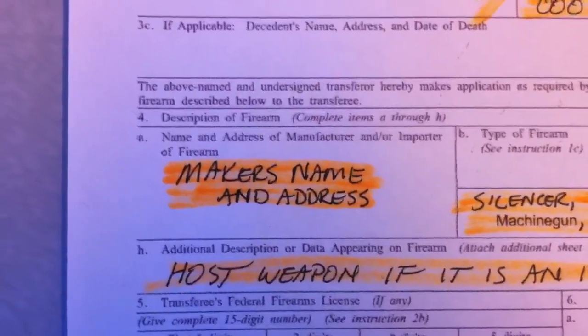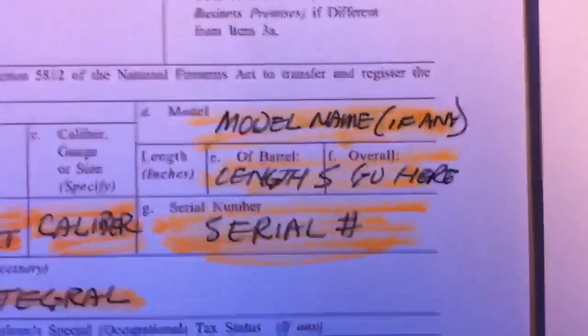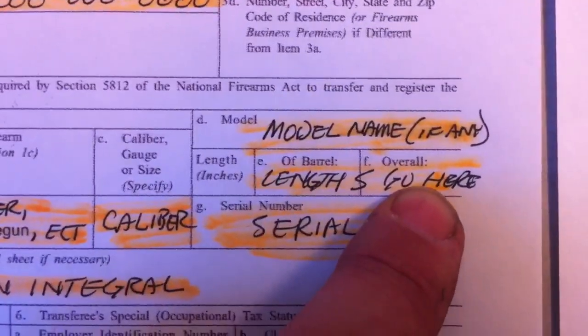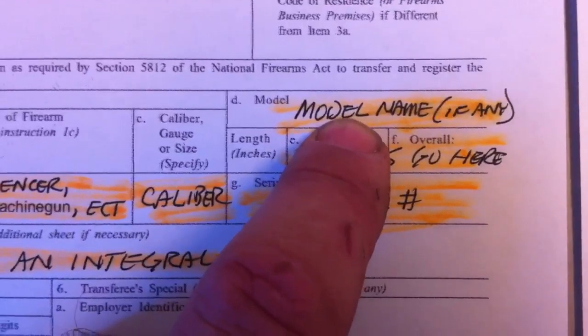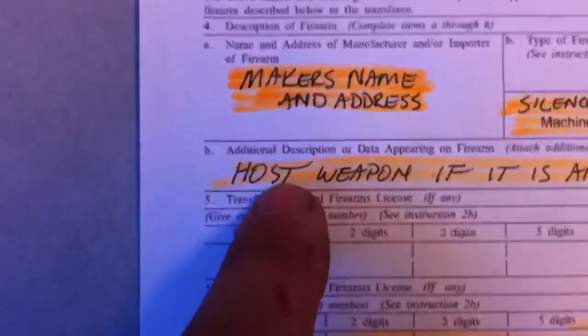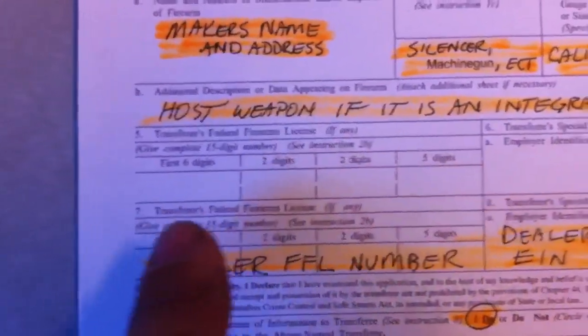Block 4 is the information surrounding the weapon itself. You'll have the maker's name and address, what it is — whether it's a silencer, machine gun, etc. As you can see, it pre-filled 'machine gun' for some reason. Then the caliber, the serial number, the length of the barrel if it has one — silencers will have N/A in that block — and then the overall length of the item. The model name goes here if it has one; a lot of suppressors from days gone by don't even have model names, so that will be blank. This block is for the host weapon, and this line will be blank if you don't have an FFL. If you do have a Curio and Relic FFL, you'll put that number there.